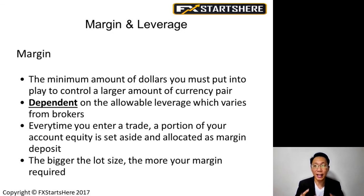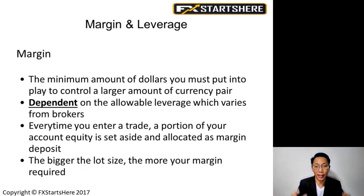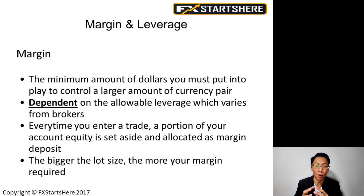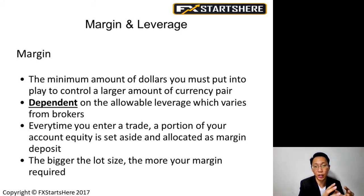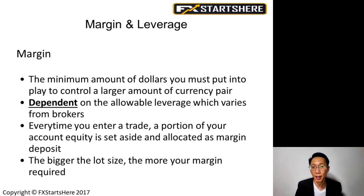Every time you enter a trade, a portion of your account equity is set aside and allocated as a margin deposit. So let's say you have ten thousand dollars in your trading account and you place a trade — one standard lot — a thousand dollars out of your ten thousand dollar account balance will be set aside as margin deposit. You cannot withdraw this one thousand dollars until your trade has closed. Once you exit the trade, that one thousand dollar margin deposit will be released back to your account balance.